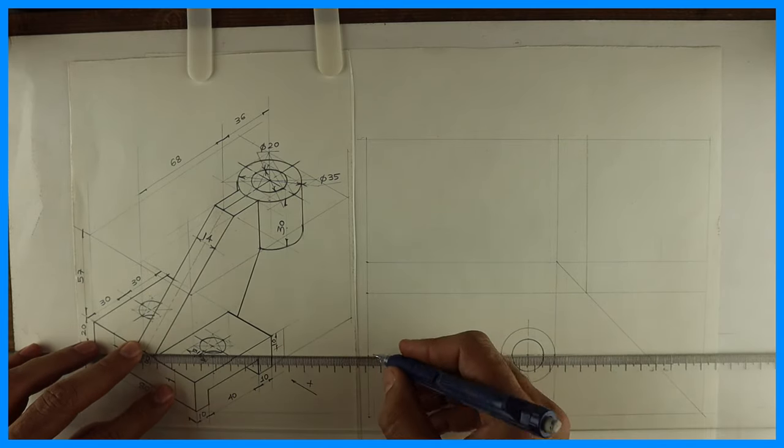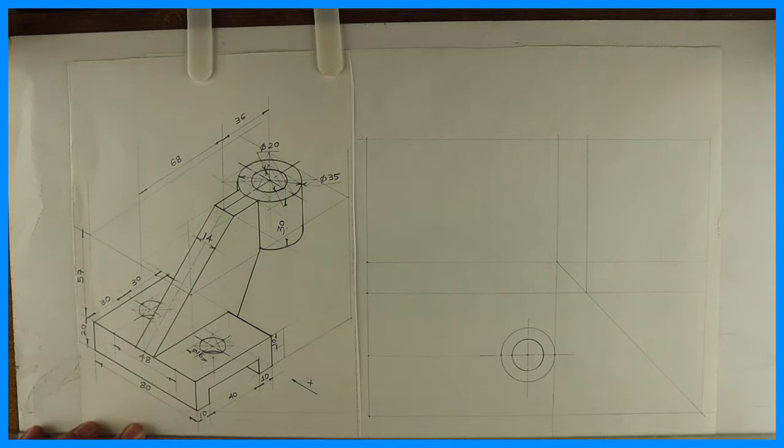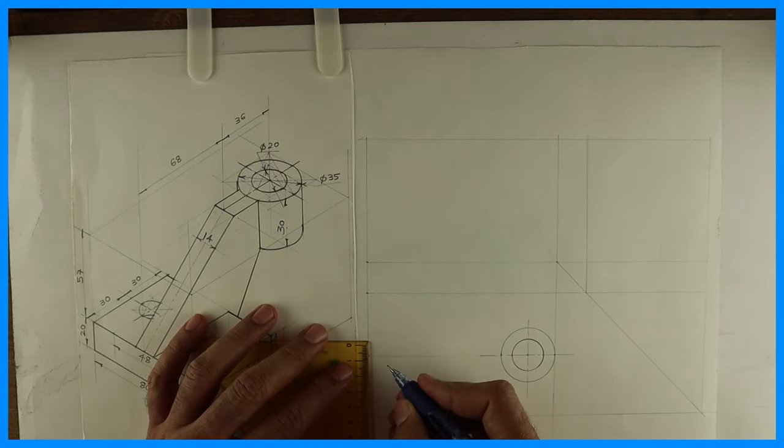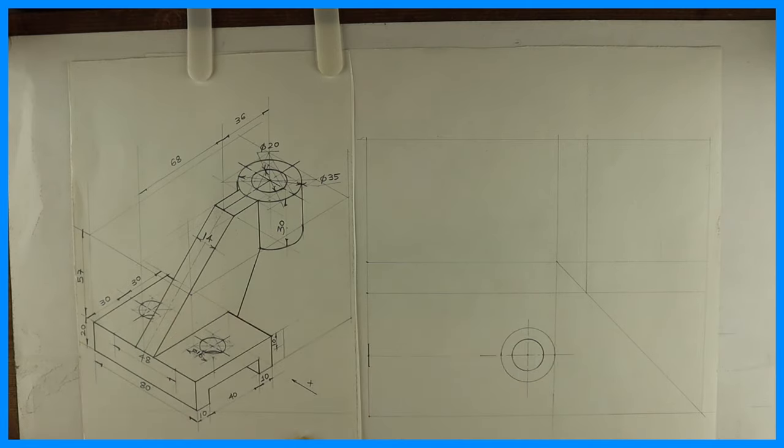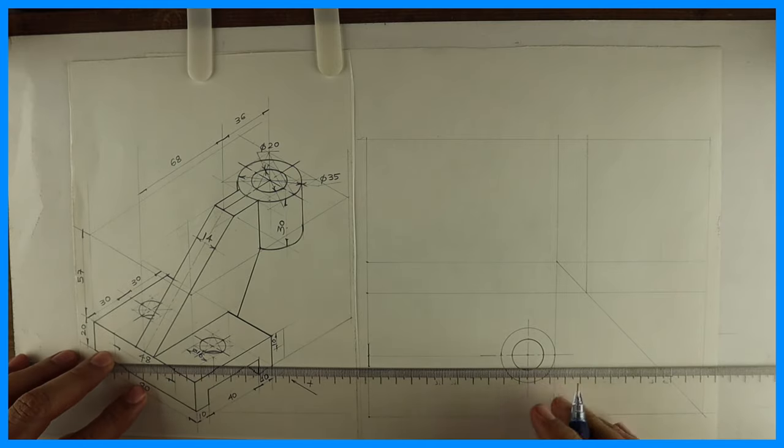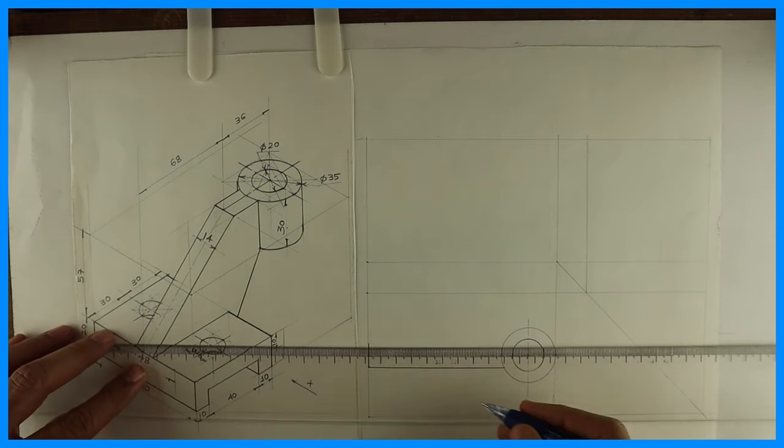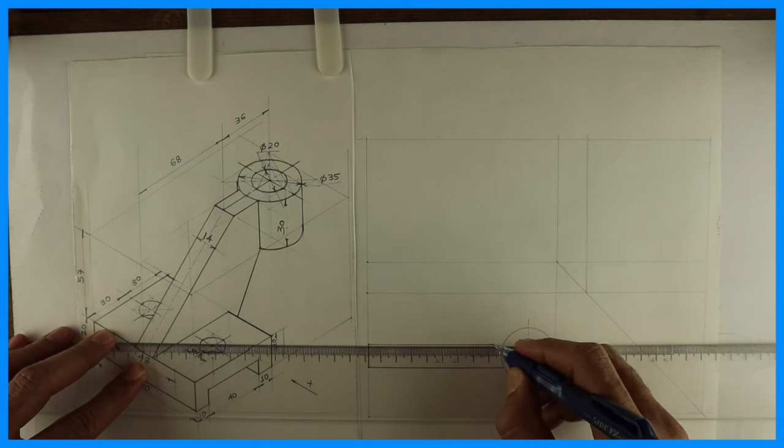Then I will draw center line, that means midpoint. I will join. Then I know how much it is: 77 on both the sides. If you see that rib, the inclined portion, it is 77 mm on both the sides.